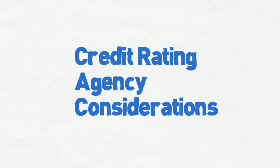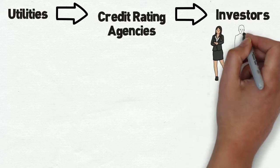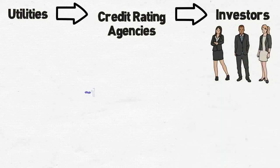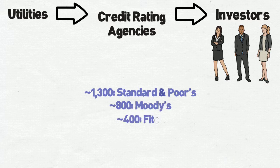Credit Rating Agency Considerations. Water utilities considering or in the process of issuing debt often request a credit rating from one or more rating agencies. Approximately 1,300 water and wastewater utilities are rated by Standard & Poor's. About 800 are rated by Moody's Research and Ratings, and Fitch Ratings rates about 400 water and wastewater utilities.